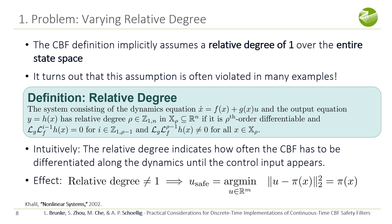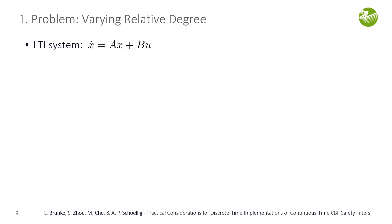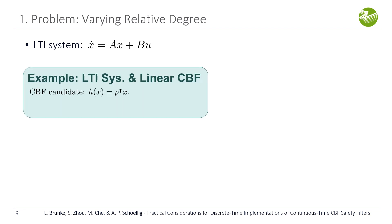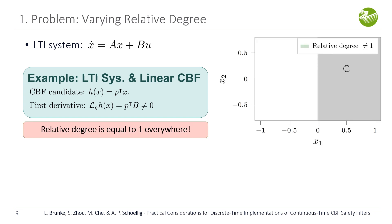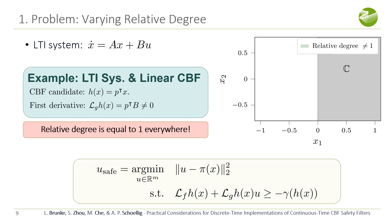If the relative degree is not equal to one, the CBF optimization reduces to an unconstrained optimization problem where the potentially unsafe control policy pi of x is certified. In the first example, we have a linear system with a linear CBF, and we assume that the vector P is not orthogonal to the input matrix B. In this case, the relative degree is equal to one and constant over the entire state space, satisfying the CBF condition and yielding a constraint on the control input everywhere.